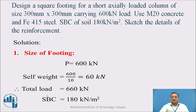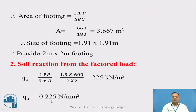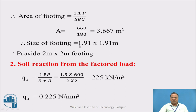The SBC of the soil, that is safe bearing capacity, is 180 kN per meter square. If we divide the total load, that is 1.1 times P, by SBC, we get the area of footing as 3.667 meter square. The size of this footing, if you take the root of it, is 1.91 m by 1.91 m. So let us provide a 2 meter by 2 meter footing.